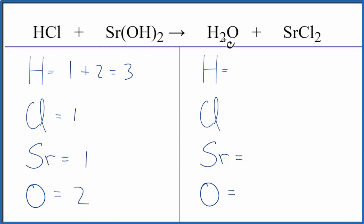On the product side of the equation we have two hydrogens, we have two chlorine atoms, one strontium, and then one oxygen.